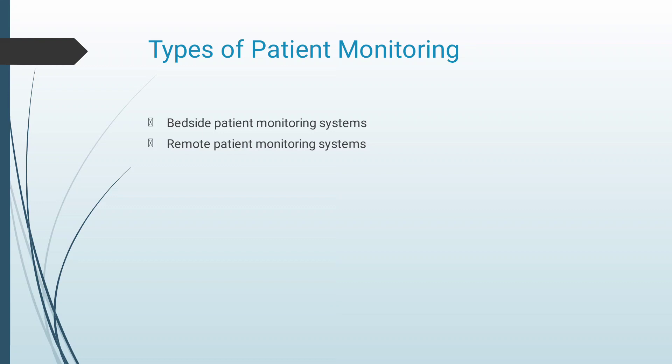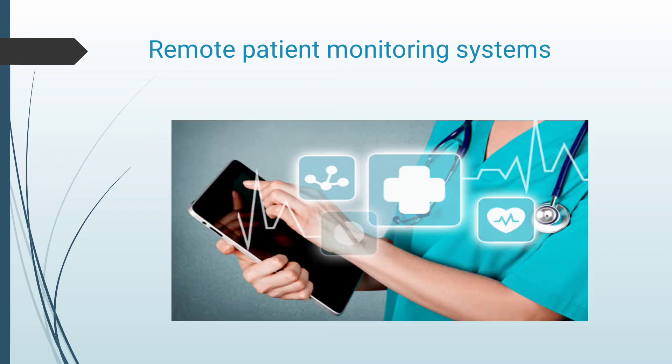There are two types of patient monitoring systems. One is the bedside patient monitoring system and the other is the remote patient monitoring system. The remote patient monitoring system is also known as the home patient monitoring system. It is used to monitor the patient in the absence of a doctor and to measure real-time changes in the patient.